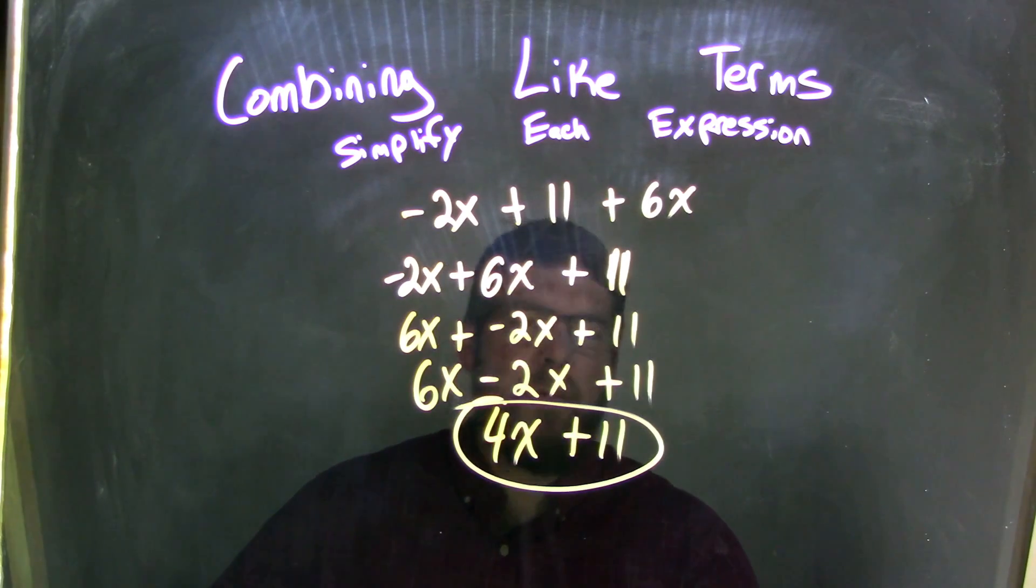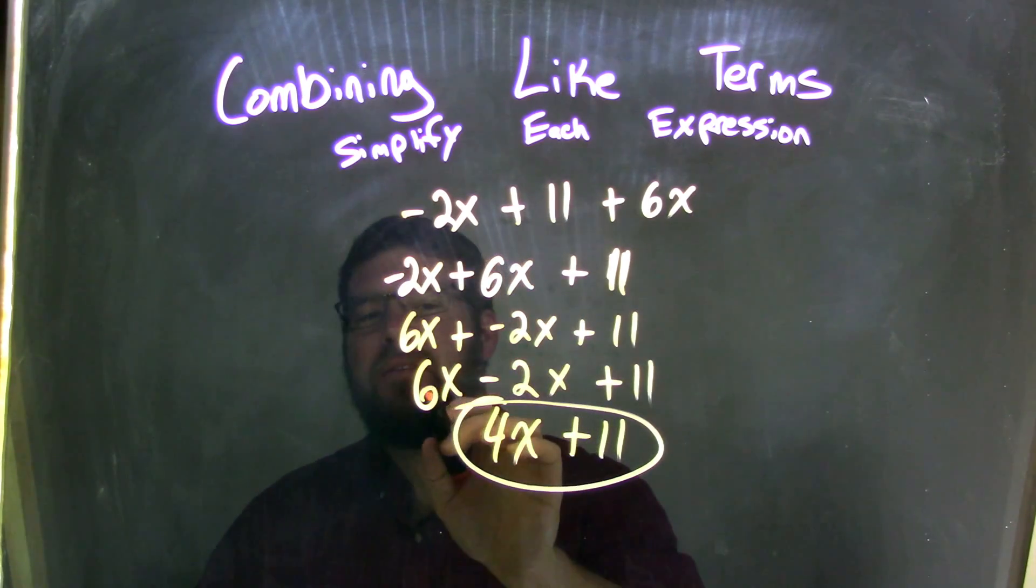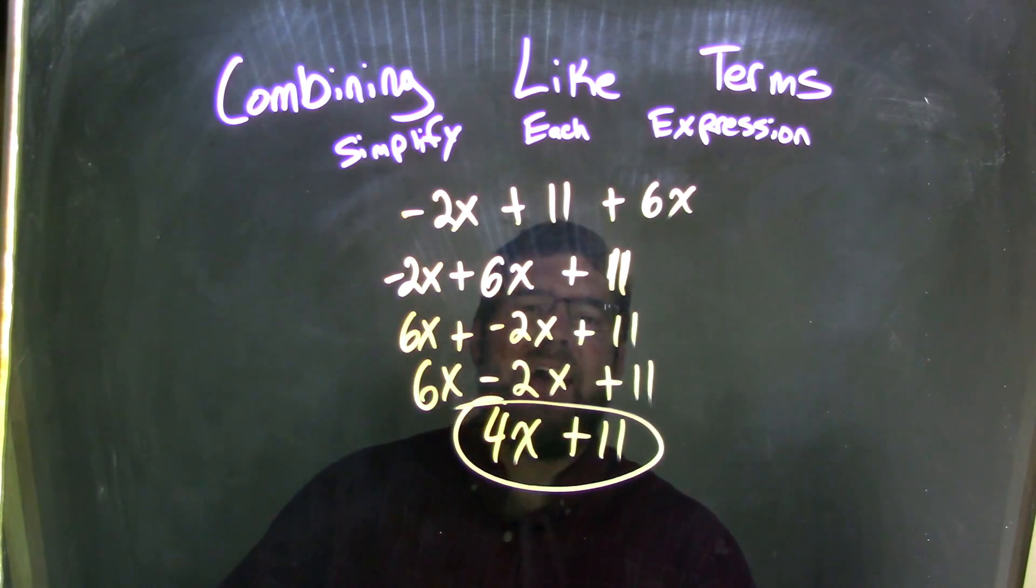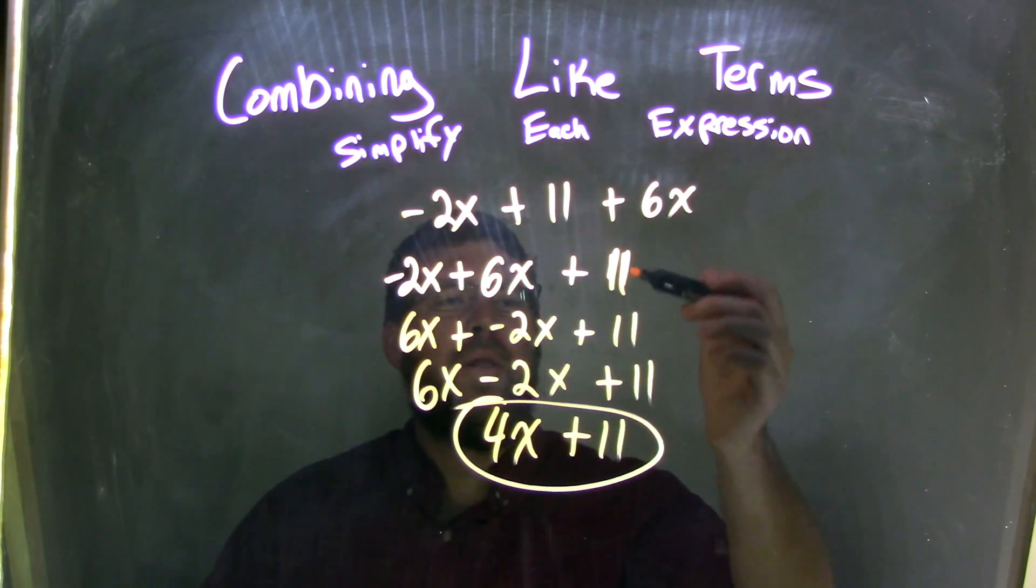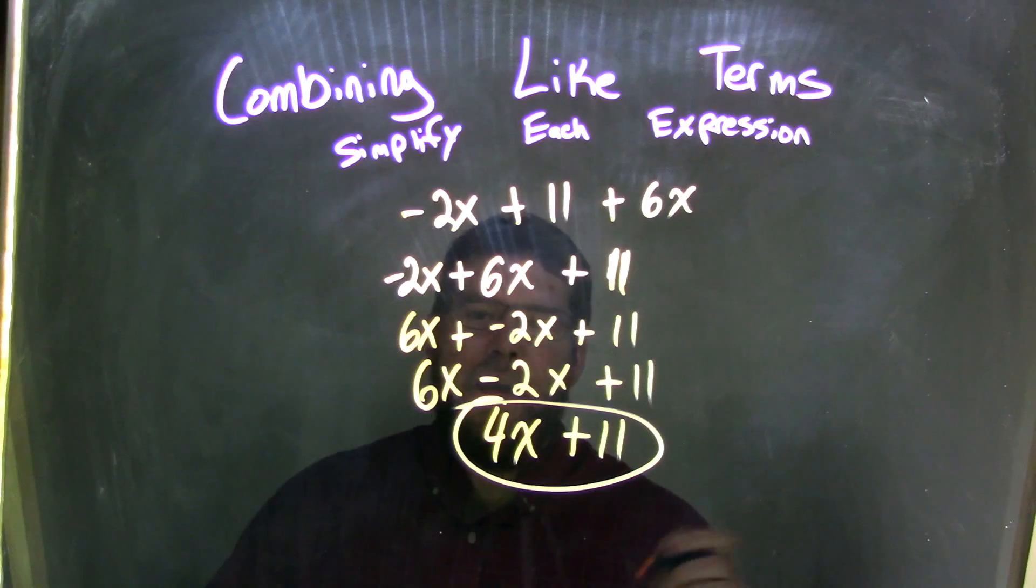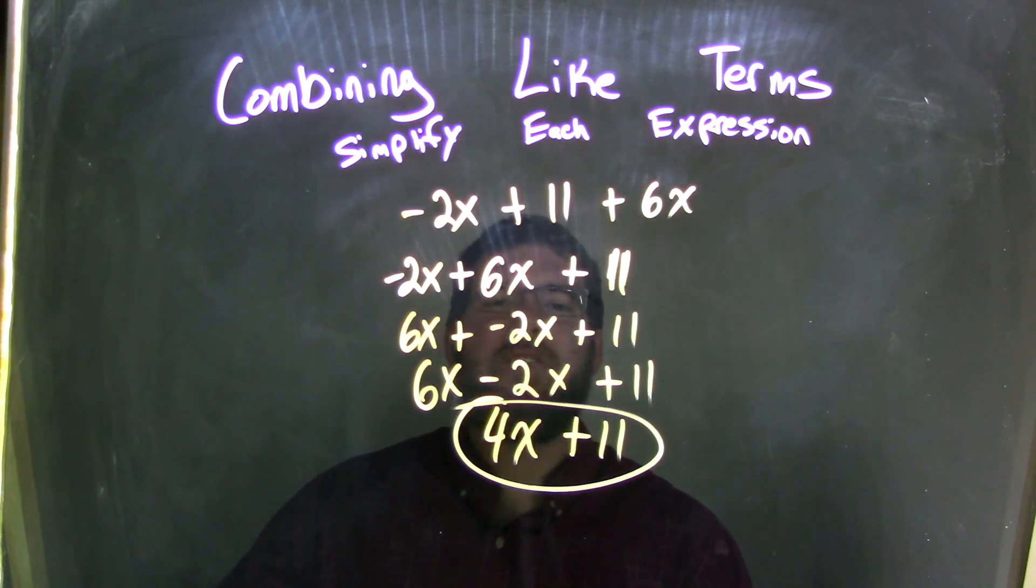And adding a negative 2x is the same thing as subtraction, so we rewrite this as 6x minus 2x. And now, that should be easier to see, that 6x minus 2x is 4x, while the whole time, I'm bringing down the plus 11. And so, our final answer here is 4x plus 11.